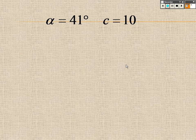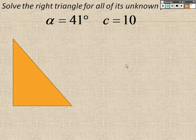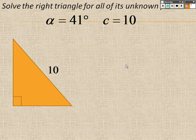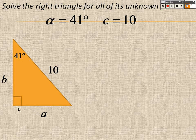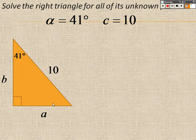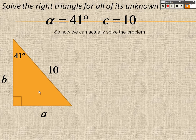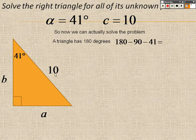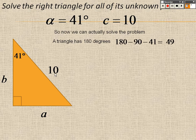Okay, so next one, solve all the unknown parts. I know the angle α is 41 degrees. I know that that's 90 because it's the right triangle. I know side c, which is 10. So to find this angle down here, once again, I know a triangle has 180 degrees, so 90 minus 41. From that, we get 49. So this is 49 degrees, no problem.